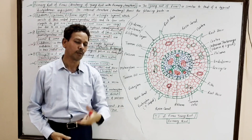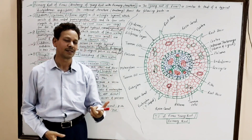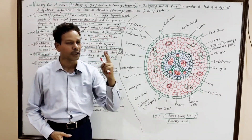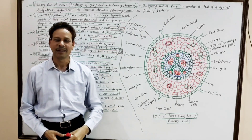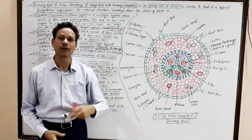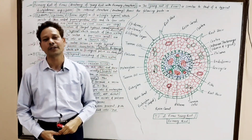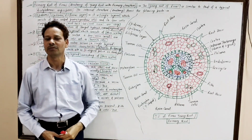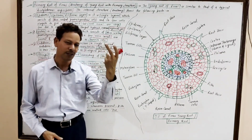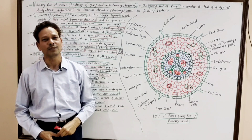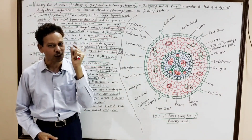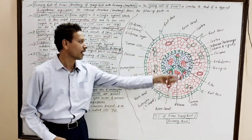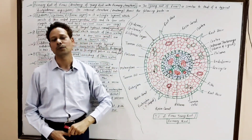Dear students, in our last lecture on Pinus, we discussed the systematic position, classification of Pinus, and external features — the morphology of the Pinus plant. The plant body is differentiated into three parts: roots, stem, and leaves. In today's lecture, I will cover the anatomy of the Pinus root.